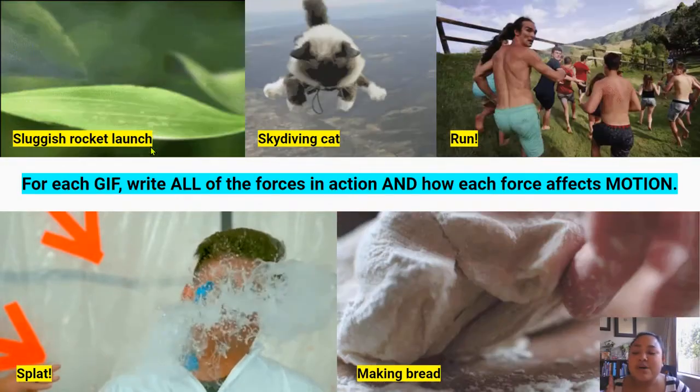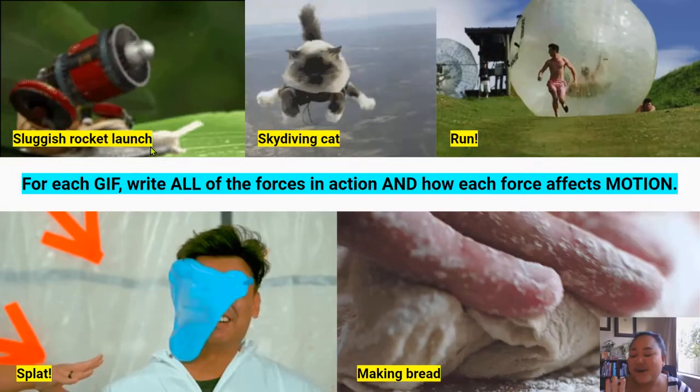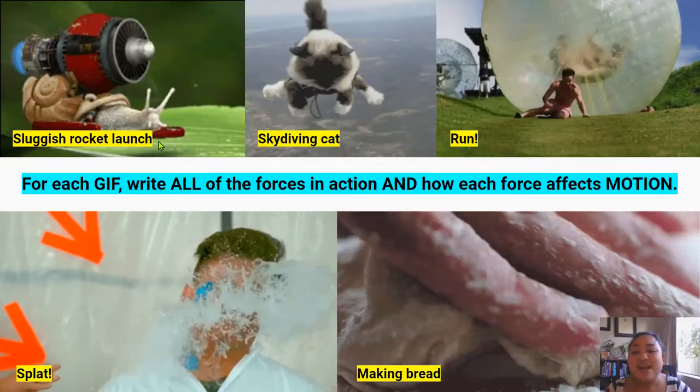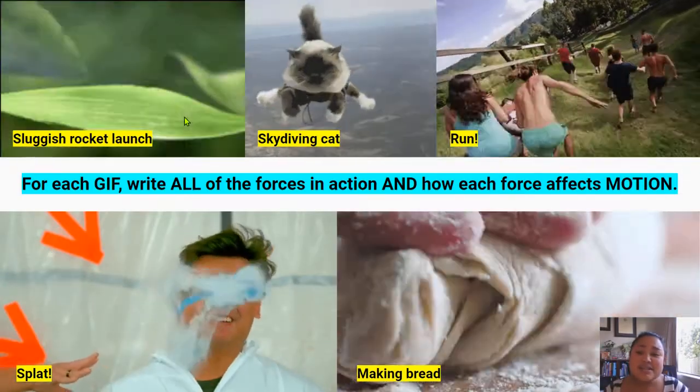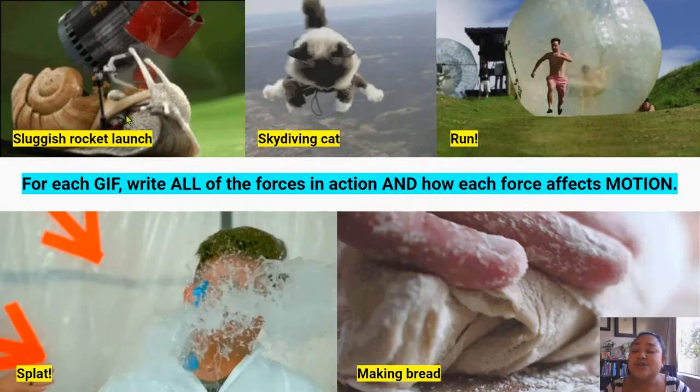What's the type of friction through air? Air resistance. And air resistance can cause the slug to decelerate.